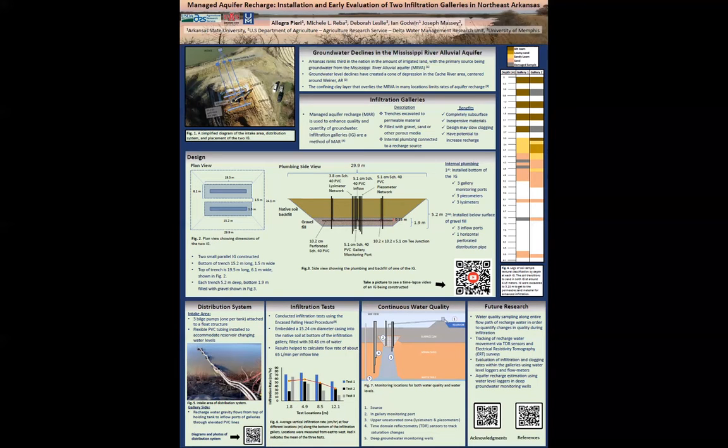Flexible PVC tubing lines connect to three holding tanks at the top of the levee ridge. Water gravity flows from the top of the holding tank to the inflow ports of the galleries through elevated PVC lines. The QR code beneath Figure 5 contains more diagrams and photos of the distribution system.